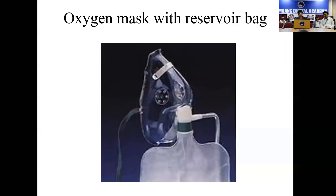This is what the non-rebreathing mask looks like — it has got two valves on it. If any one of the valves falls off, it will become a partial re-breathing mask and might not be able to achieve more than 60 to 70%. If both the valves are working, then we'll be able to achieve at least more than 90% in these patients. But remember, it depends on the amount of oxygen available.